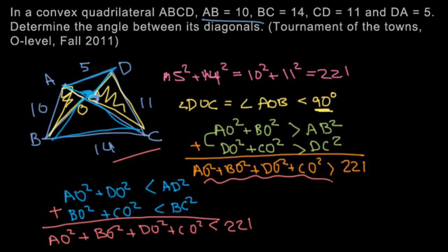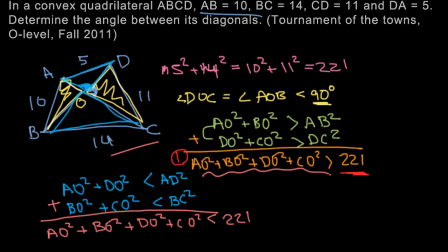And we were looking for a contradiction, and we found it. If you look at this first one right here, we're seeing that this value is greater than 221, but in our second one, it's saying that this left-hand side, which is exactly the same as this one, is less than 221. And that's not possible, so this is a contradiction.